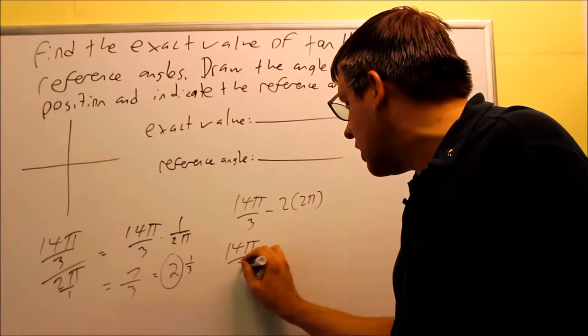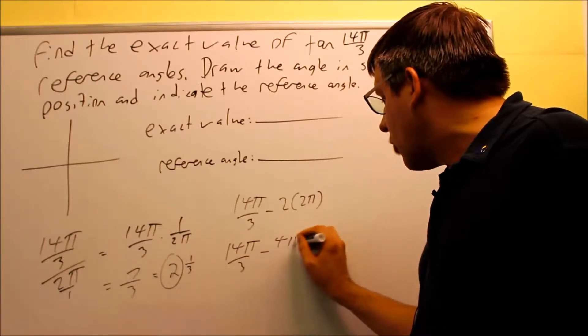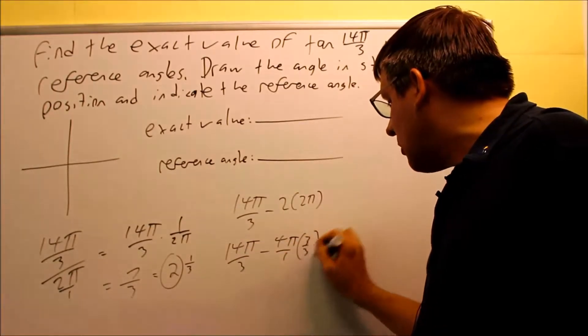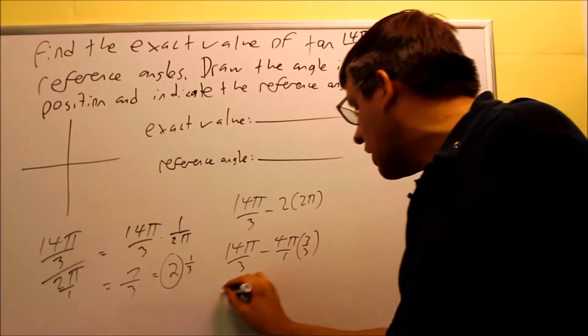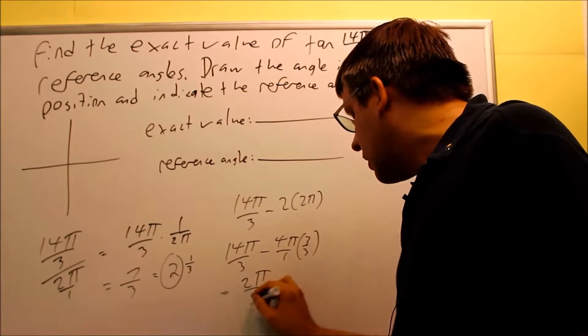So, 14π over 3 minus 4π over 1, which you can do common denominators on that. So, 14 minus 12, that's going to give us 2π over 3 left over.